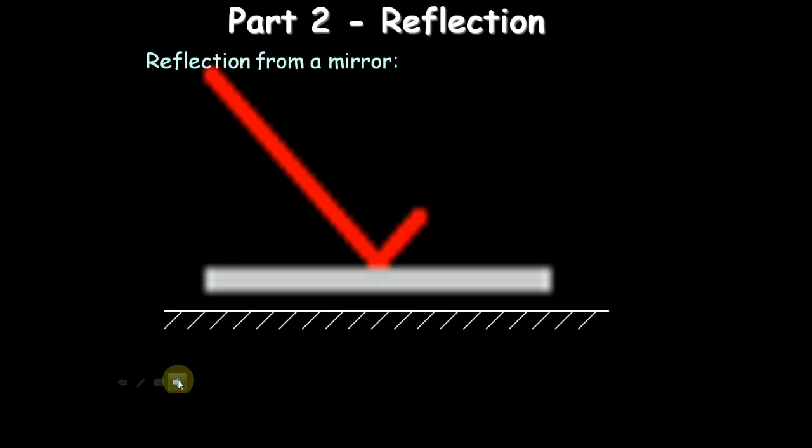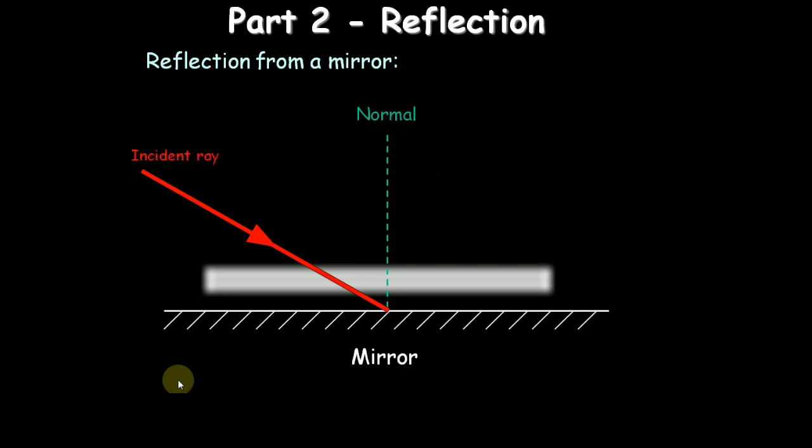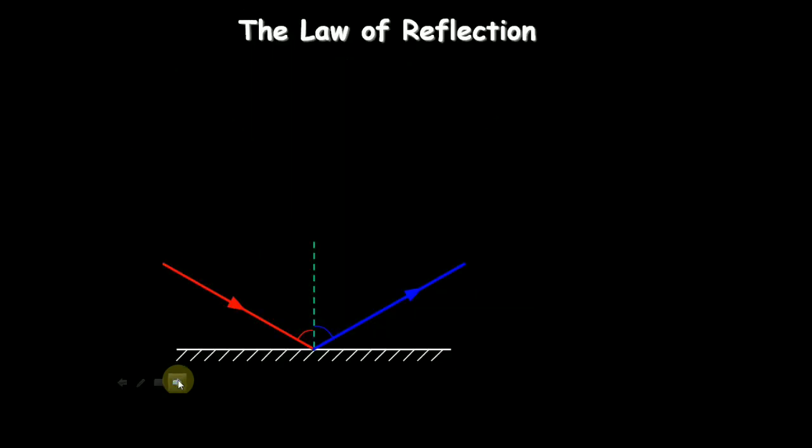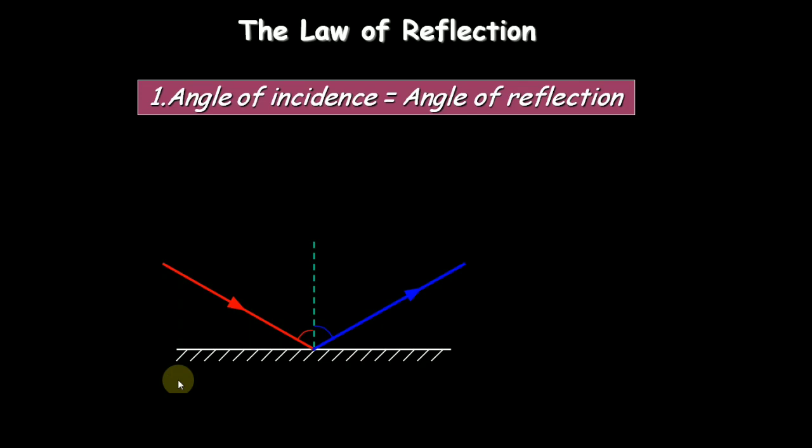Part 2, reflection. What is reflection? Reflection from a mirror. A light incident ray is reflecting back, that is called reflected ray. Here angle of incidence is equal to angle of reflection.